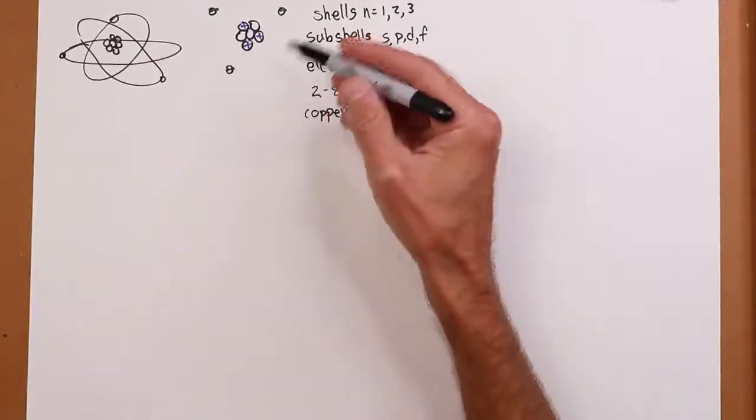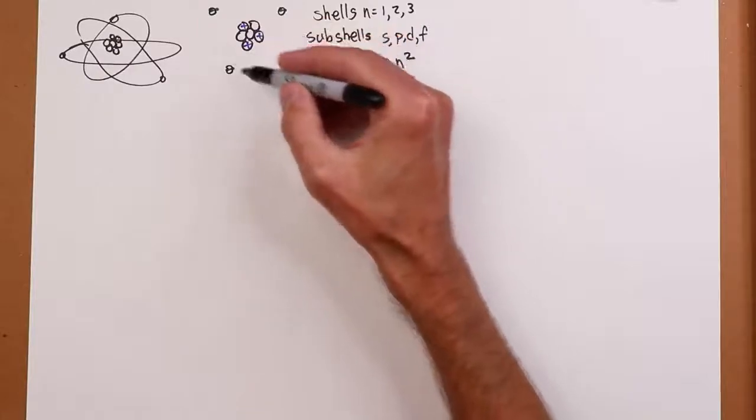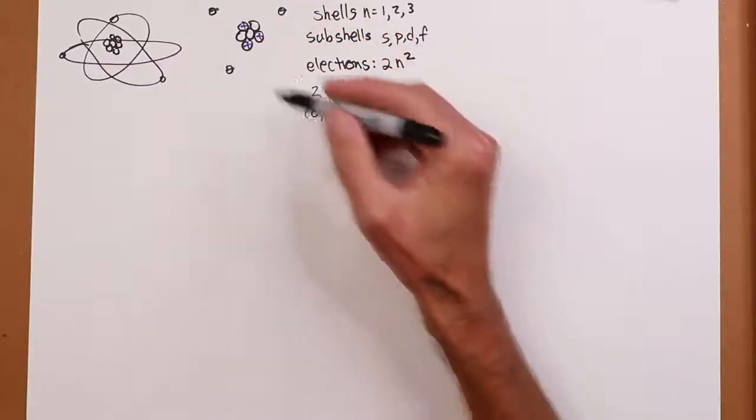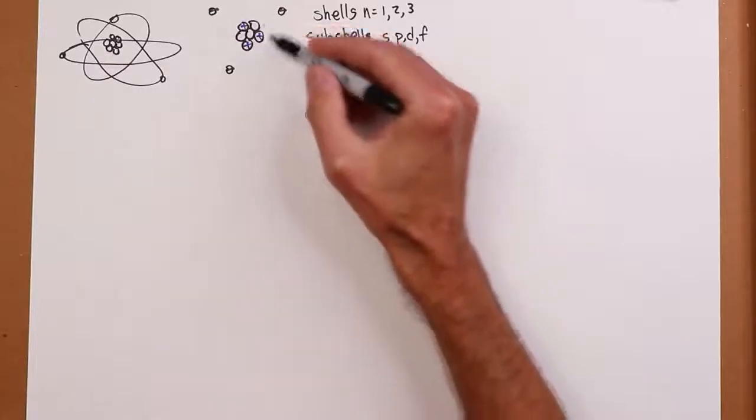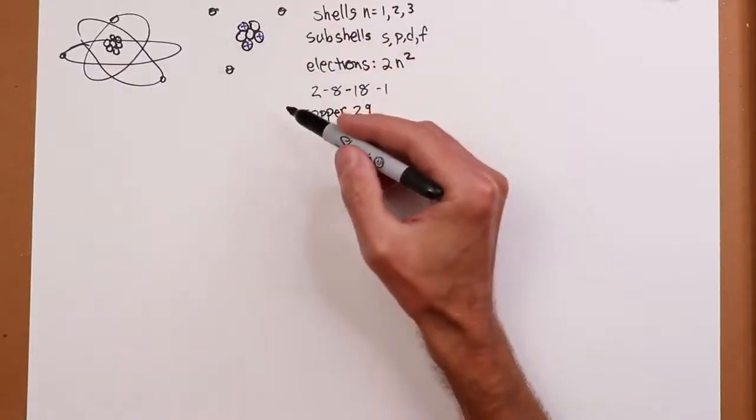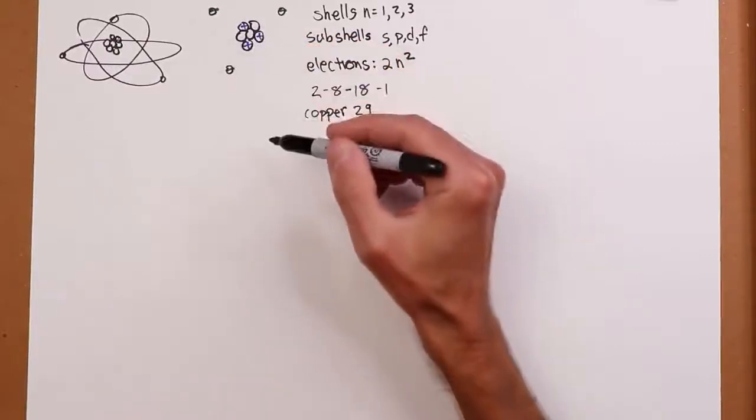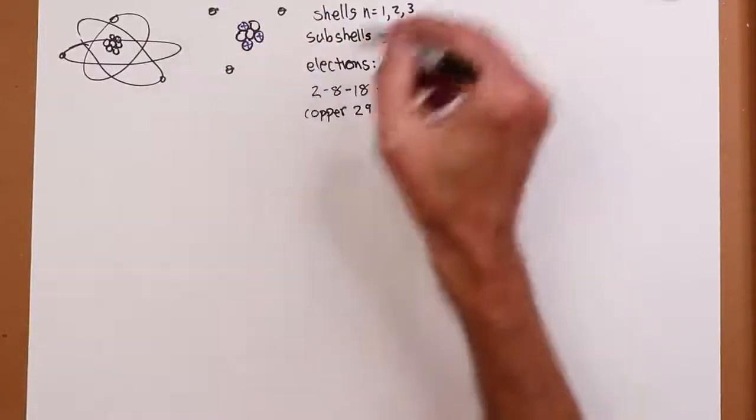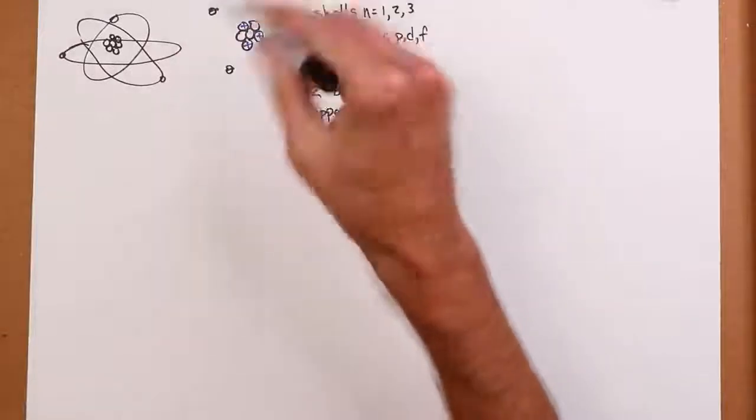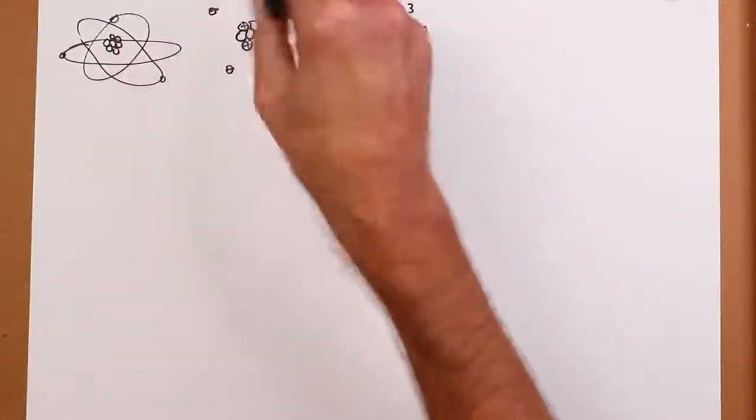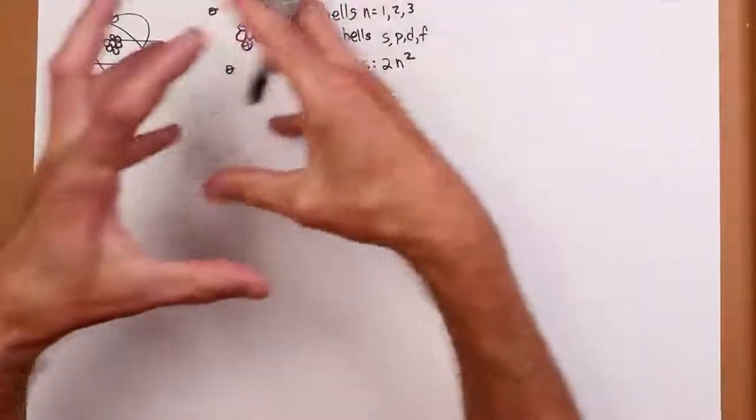Opposite charges attract, and like charges repel. So if like charges repel, why doesn't the nucleus here fly apart? Well, there's something called the strong nuclear force that keeps this bound together. And the electrons, of course, are in motion, so you could imagine that that motion is preventing them from actually collapsing in.